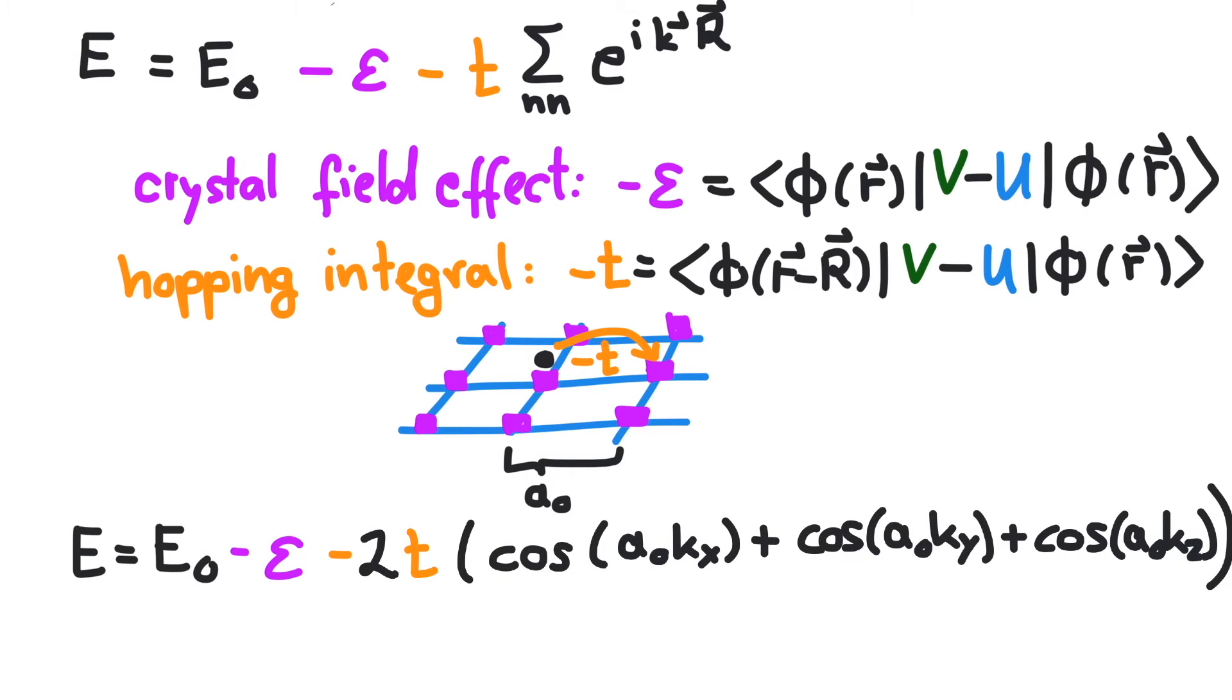This result offers important insights into electrons in a crystal. It can be used to compute the density of states and predict experimental results, for instance, for photoemission spectroscopy and scanning tunneling microscopy, among others.